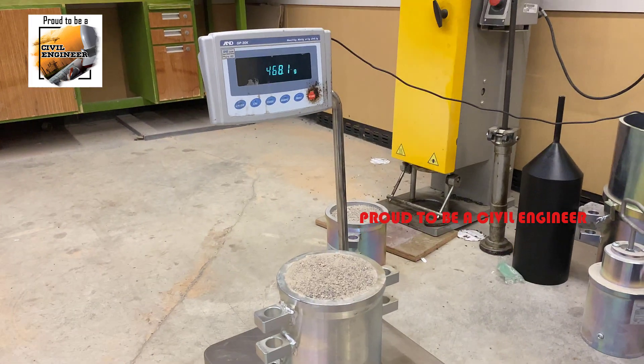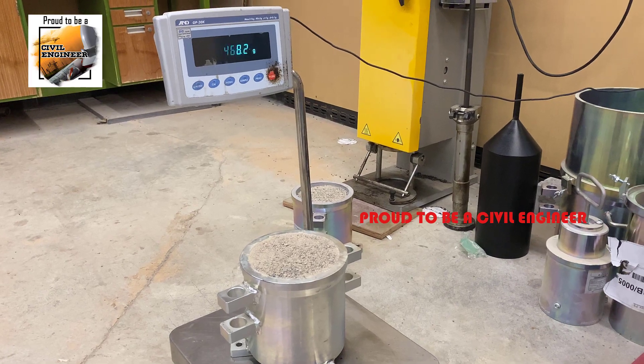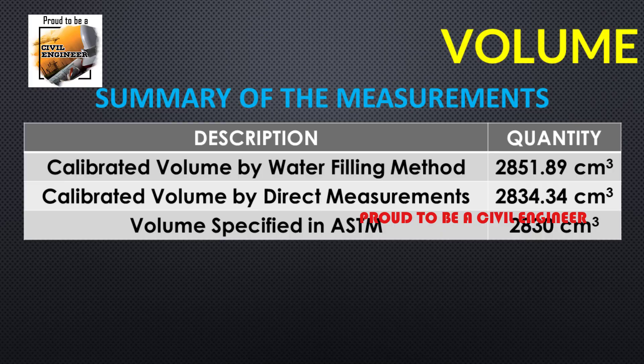The weight of the mold with soil is measured, and it is 14,468.3 grams. The calibrated volume of the mold by the water-filling method is 2,851.89 cubic centimeters. The calibrated volume of the mold by direct measurements is 2,834.34 cubic centimeters. The specified volume of the mold in the ASTM standard is 2,830 cubic centimeters. The variation of volume for both methods is 0.8% and 0.15%. As the water-filling method is more accurate, the volume of the mold is considered as 2,851.89 cubic centimeters.